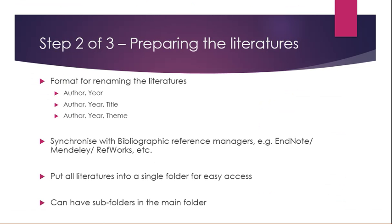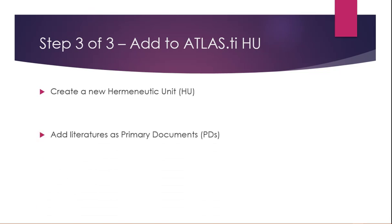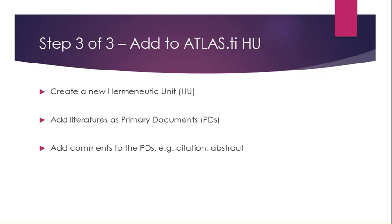Now I want to start using Atlas.ti. Step number three of three in this first video is to add the literatures to the Atlas.ti HU — Hermeneutic Unit — which is a project created in Atlas.ti. First, we're going to create a new Hermeneutic Unit. Then we're going to add those literatures as primary documents, or PDs. I'm going to add comments to the PDs — for example, the citation and abstract — group the PDs according to families, and finally save the HU.